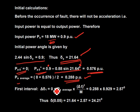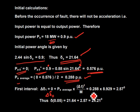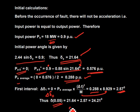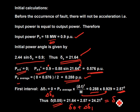The first change in delta: delta-delta(1) = delta-delta(0) + Pa_average × (delta-t²/M) = 0 + 0.288 × 8.929 = 2.57 degrees. Therefore delta at the first interval: delta(1) = delta(0) + delta-delta(1) = 21.64 + 2.57 = 24.21 degrees at t = 0.05 seconds. This new value of 24.21 degrees becomes the starting point for the next set of calculations.